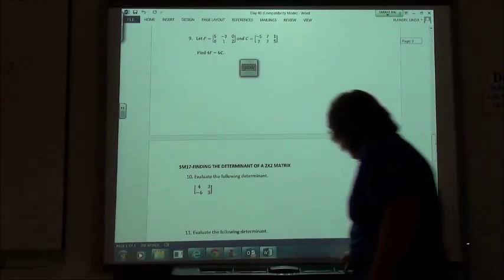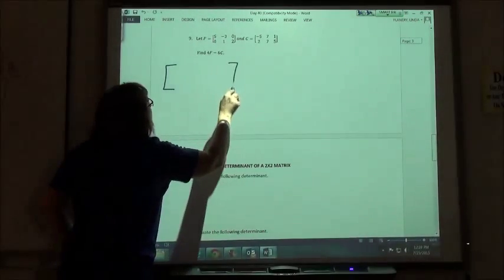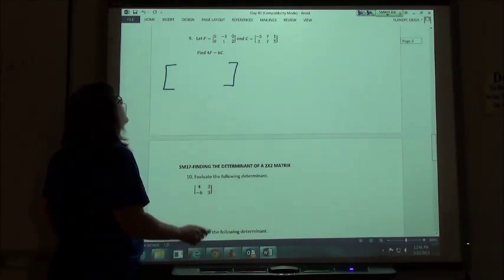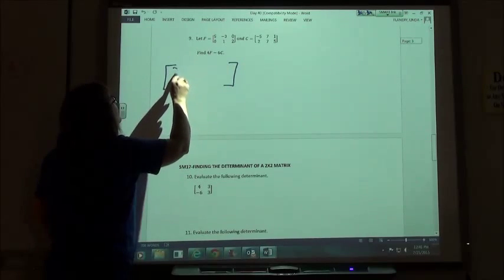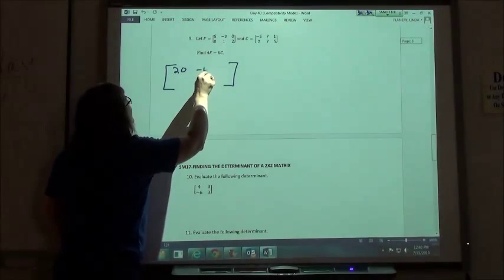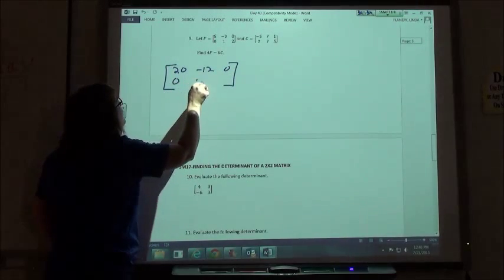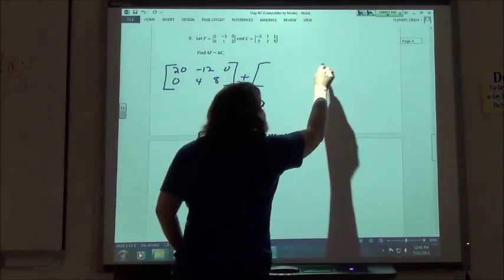And number 9. First we're going to take F times 4. So my new matrix would be 12, 0, 0, 1, 8. And then we're going to take C times negative 6.